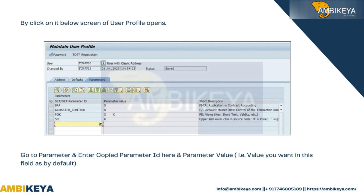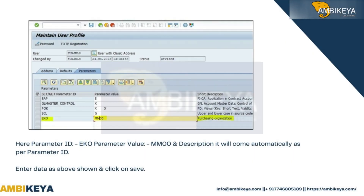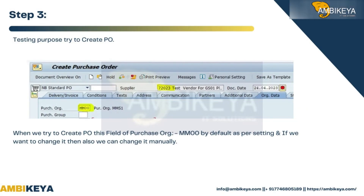Here, the parameter ID is EKO and the parameter value is MM00. The description will populate automatically based on the parameter ID. Enter the data as shown and click Save.